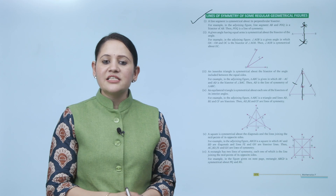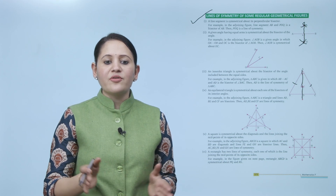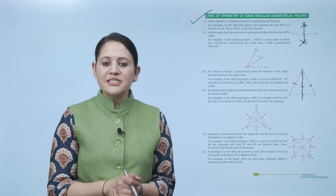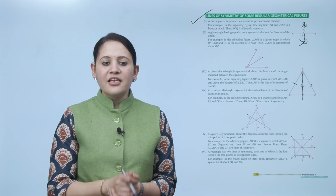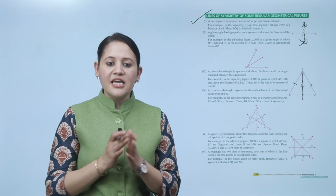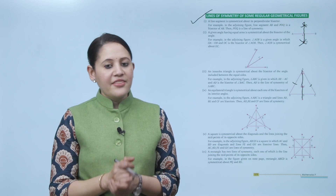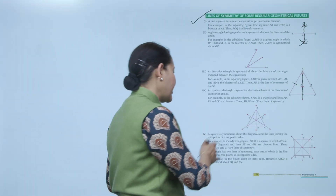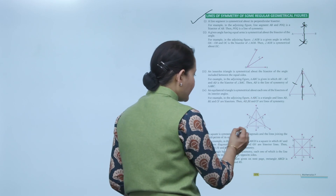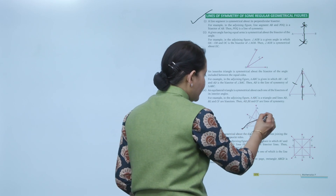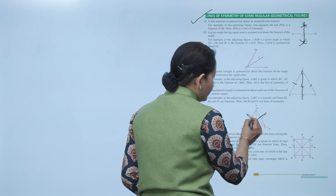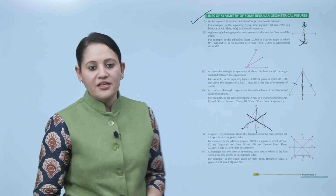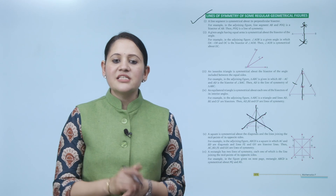An equilateral triangle is symmetrical about each one of the bisectors of its interior angles. For example, in the adjoining figure, triangle ABC has lines AD, BE, and CF as the bisectors. Then AD, BE, and CF are lines of symmetry. Since all three sides are equal, BE, CF, and AD are the three lines of symmetry for this equilateral triangle.